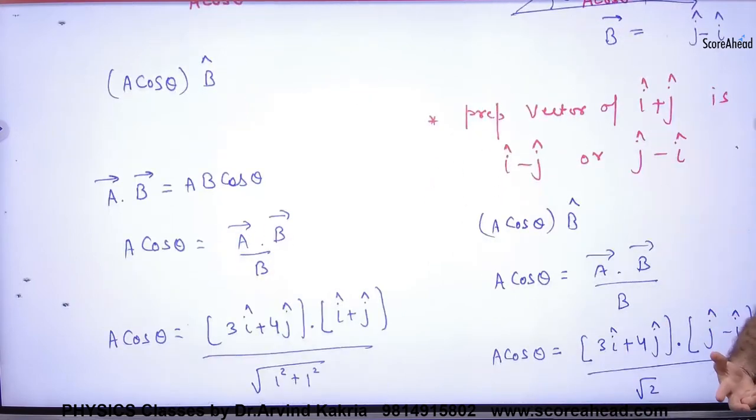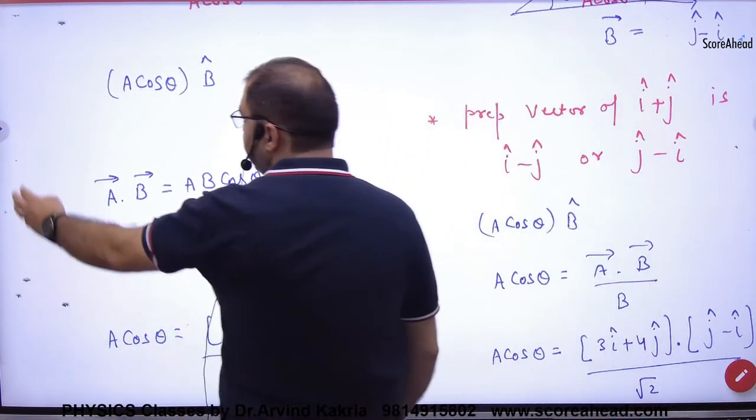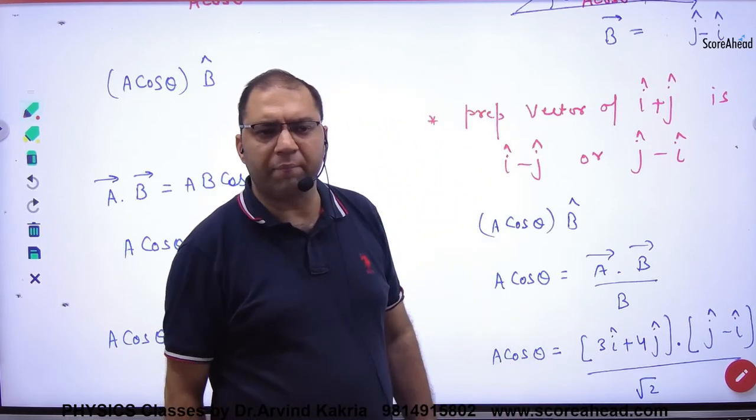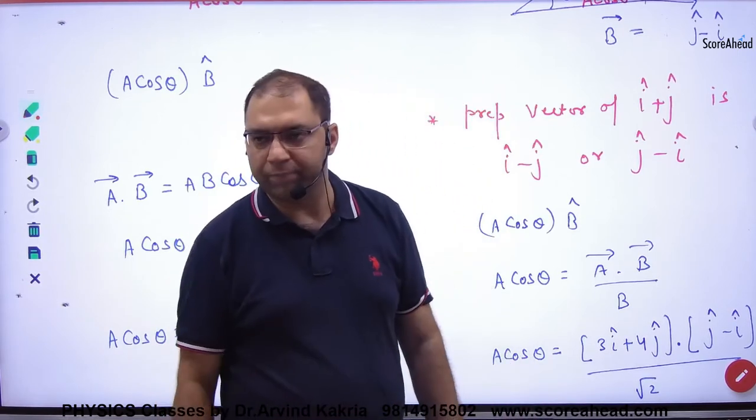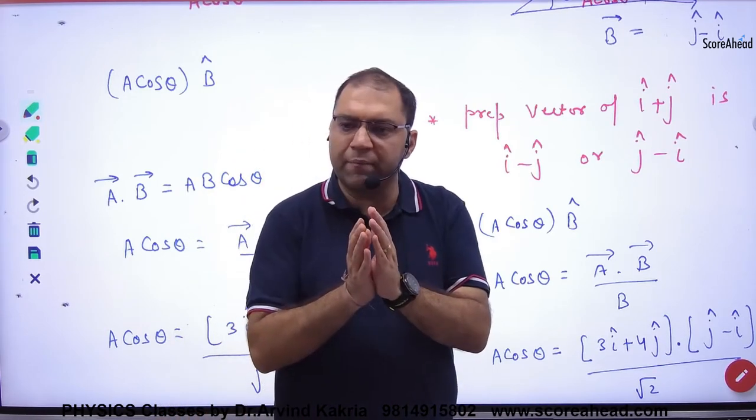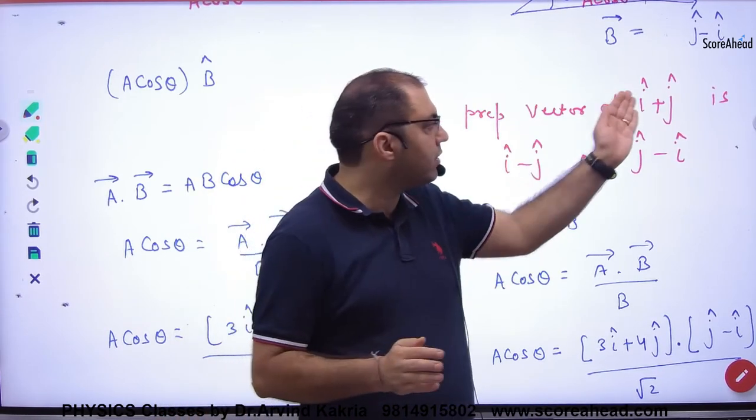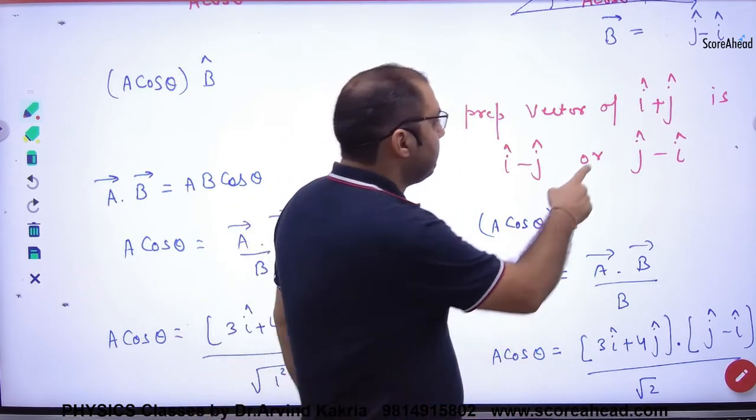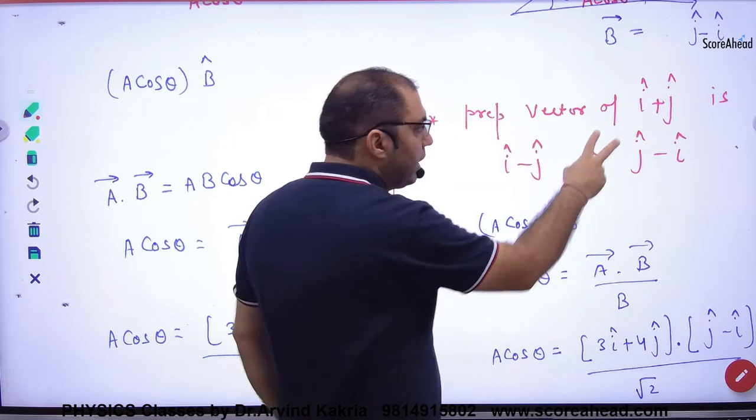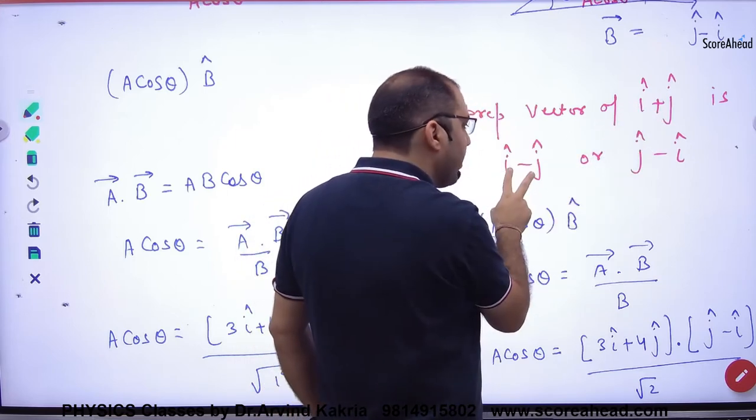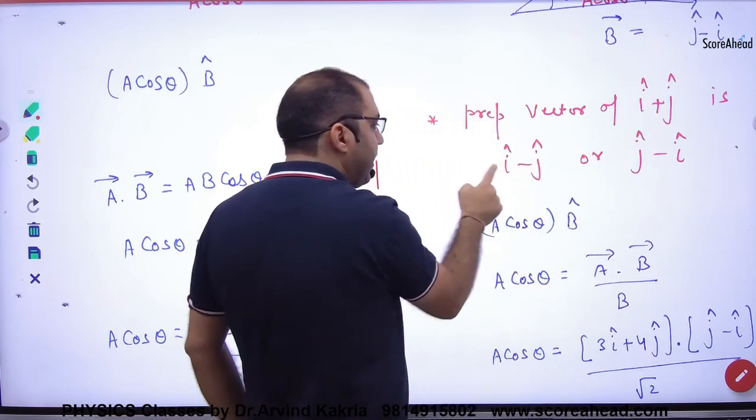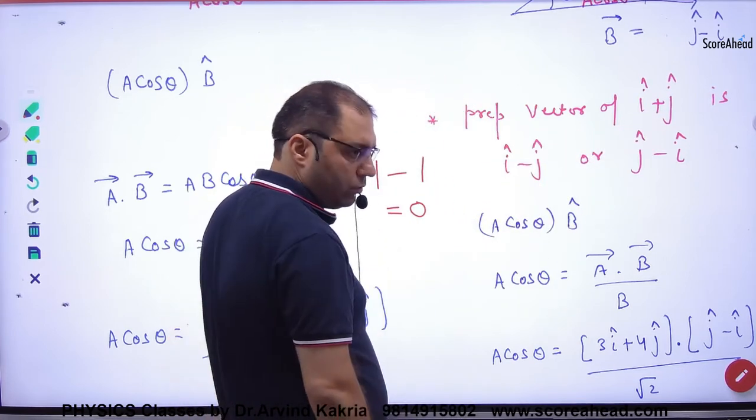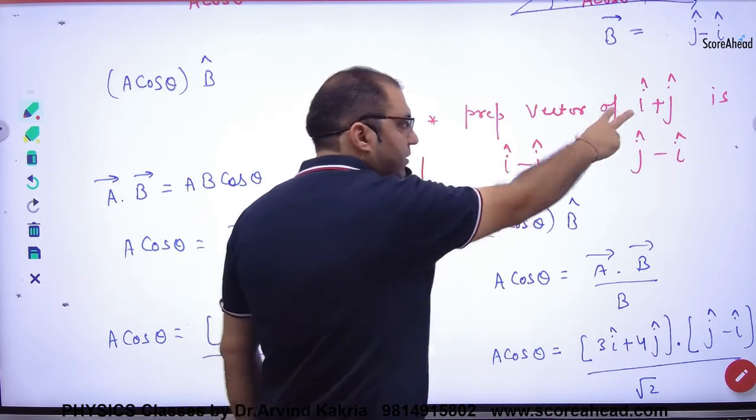This is a key detail. If i cap plus j cap, if there is a vector, then I will ask you which is perpendicular. Whatever vector is perpendicular to it, the dot product will be zero. So I thought that i cap plus j cap perpendicular to i cap minus j cap. Why? When I multiply with i, then 1. j dot j is 1. What will it be? Zero. This vector is perpendicular to it.